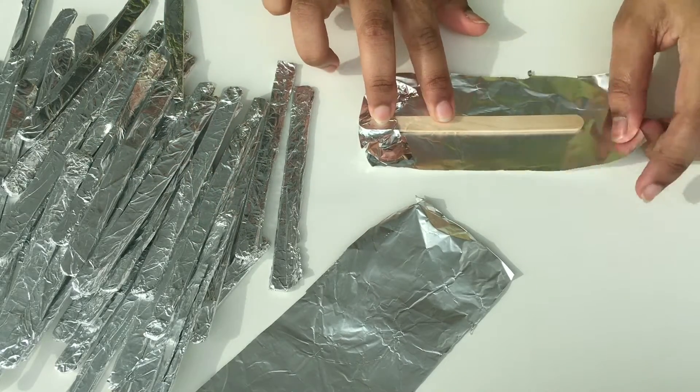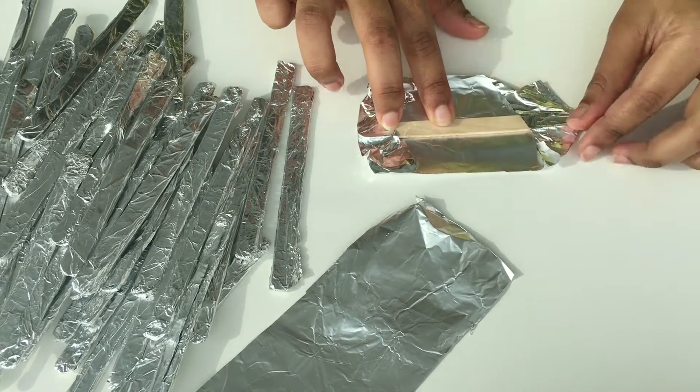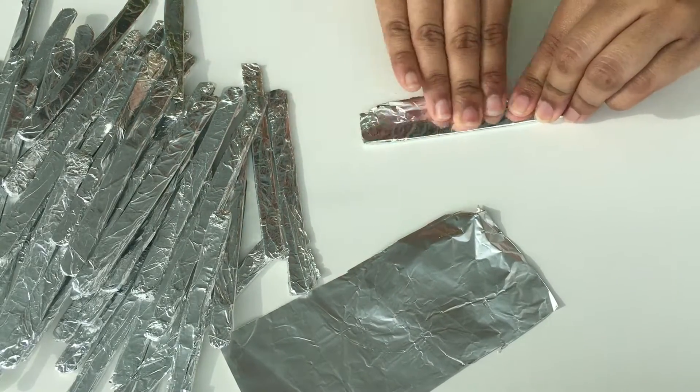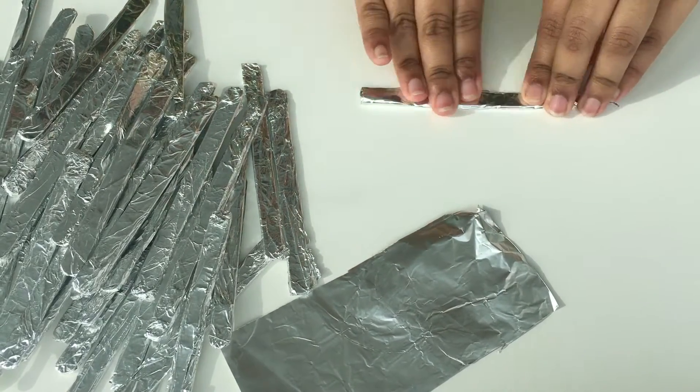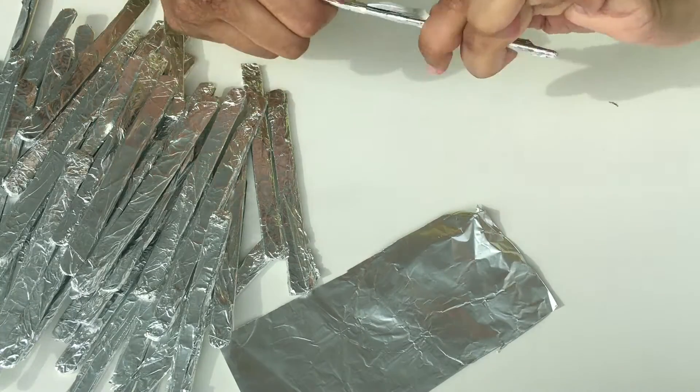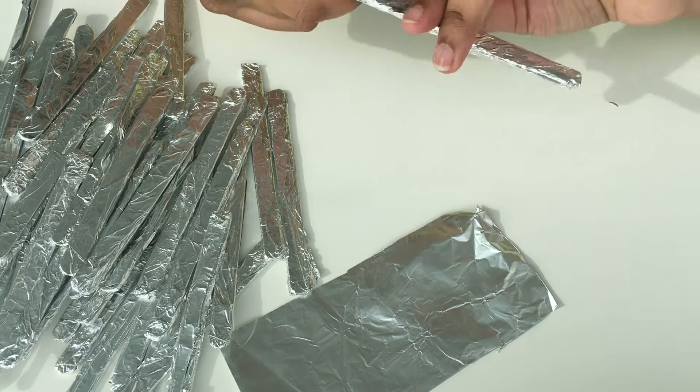I have already wrapped most of it beforehand, but at first I cut out a small piece of aluminum foil which was a little bit longer in length than the popsicle stick. I placed the popsicle stick on the foil, then started by folding the ends and then wrapping the stick tightly.